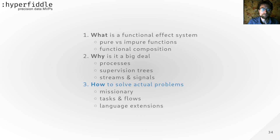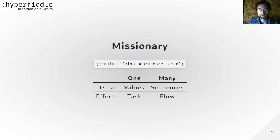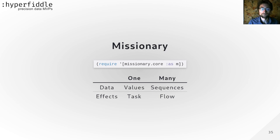Now let's get more practical. This is Missionary — a Clojure library that works in Clojure and ClojureScript. It's a collection of purely functional operators that work on effects. There are two kinds of effects: tasks and flows. Tasks produce a single value; flows produce multiple values. You can use flows for discrete time or continuous time — discrete gives you back pressure, continuous gives you lazy sampling.